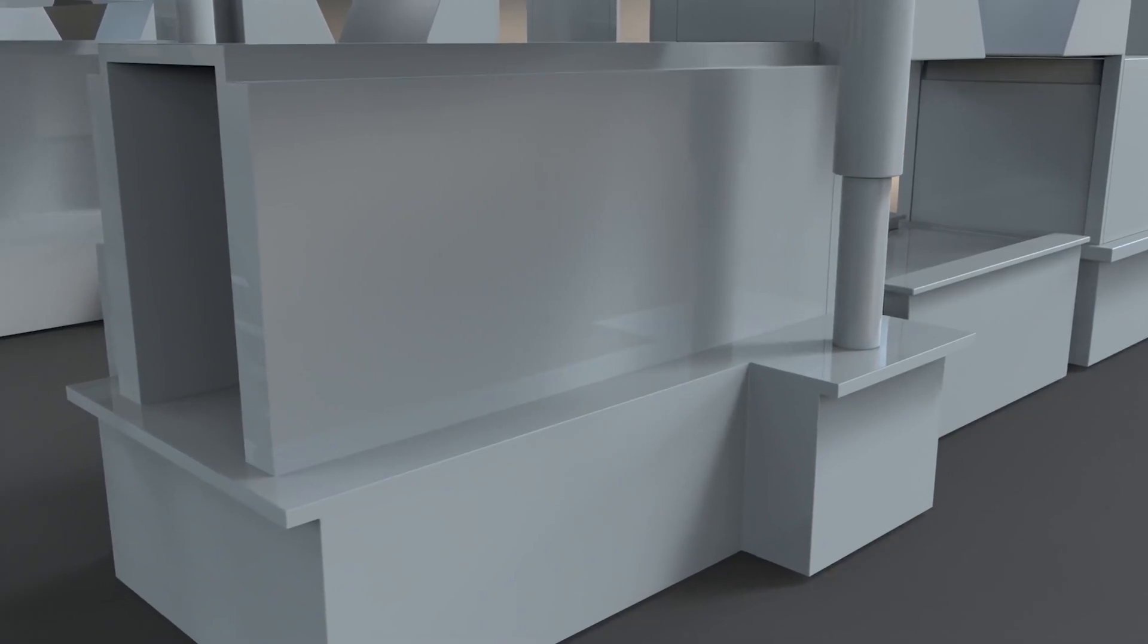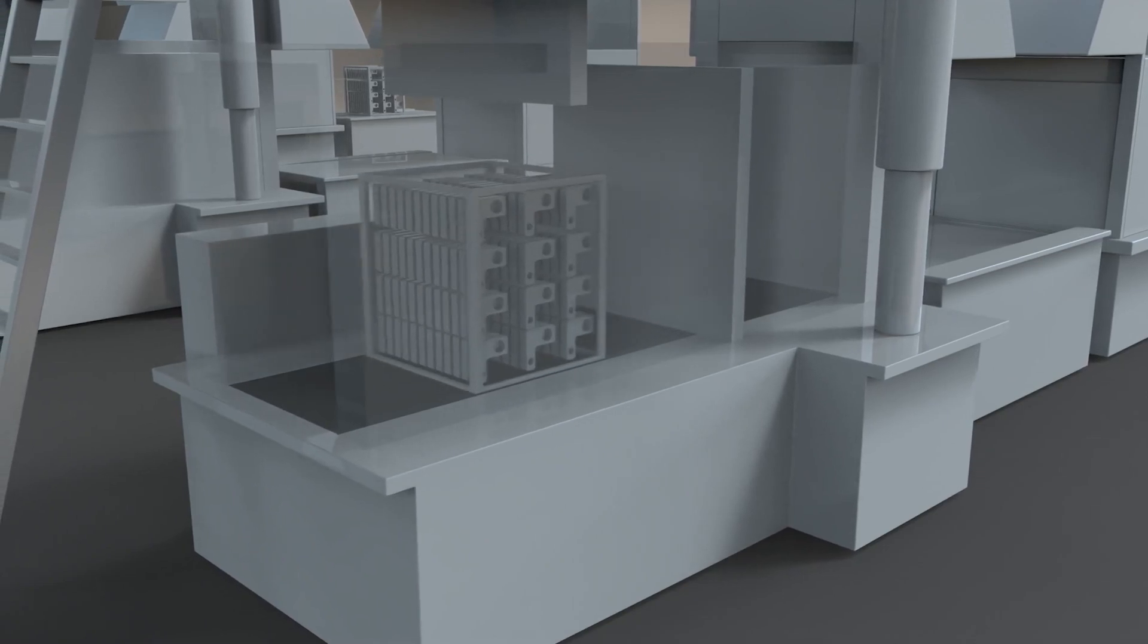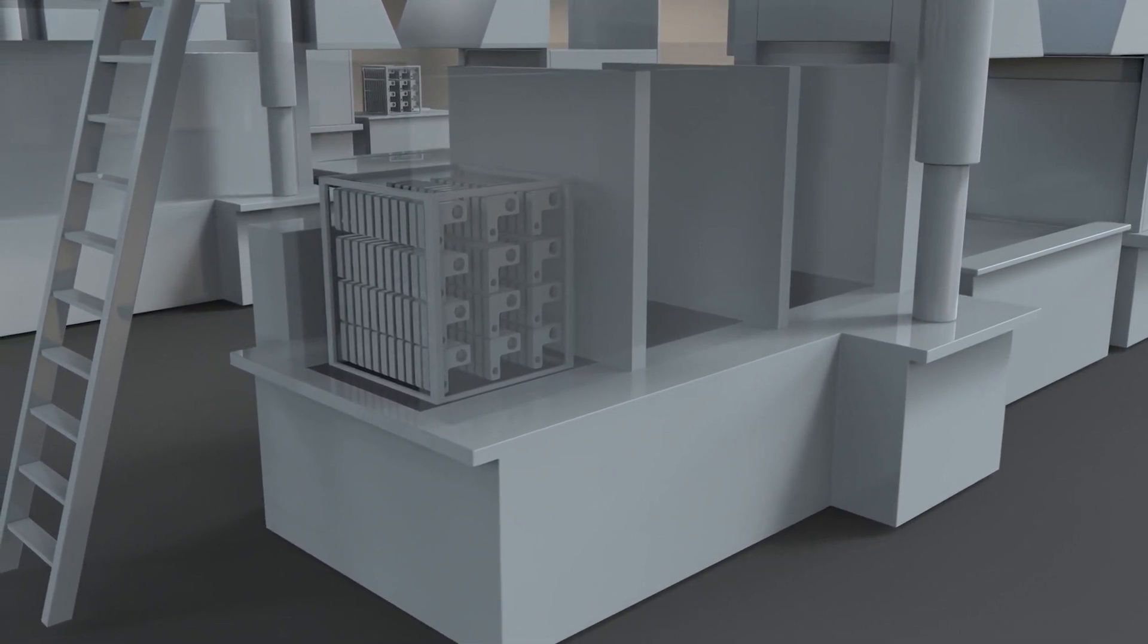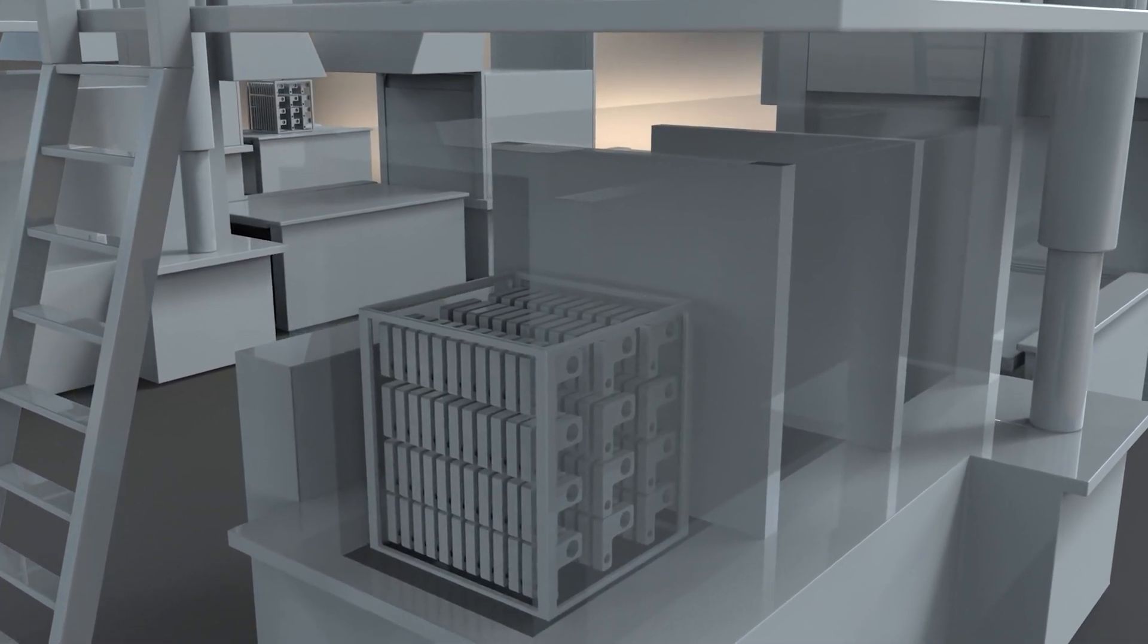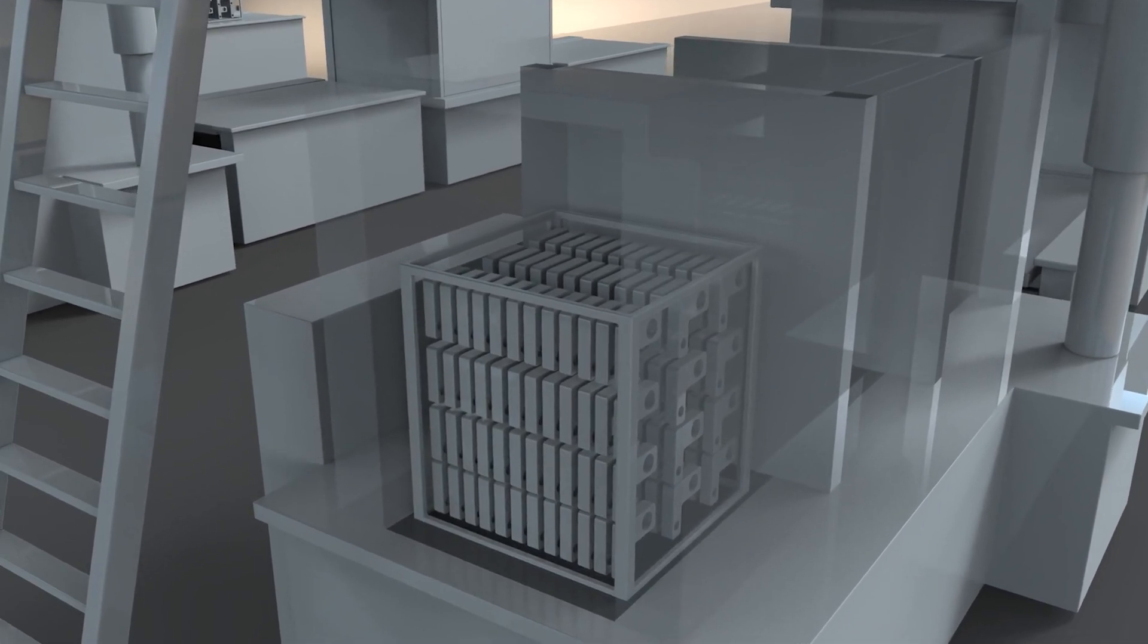Then the basket with the workpieces moves to the austenitization chamber, where the heating phase takes place, reaching an optimal temperature for the diffusion of carbon in the austenite, typically between 800 degrees Celsius and 900 degrees Celsius.